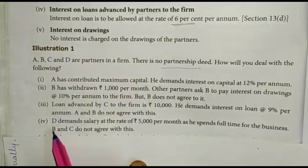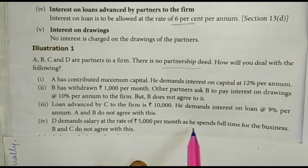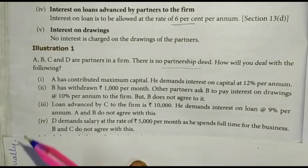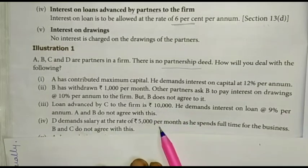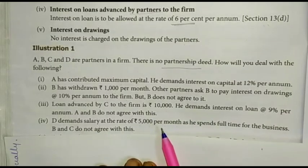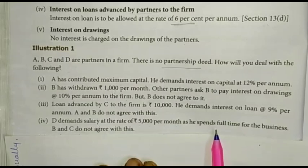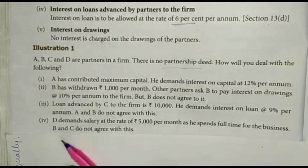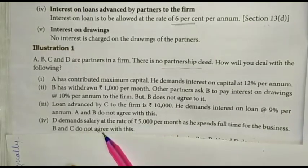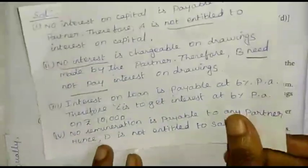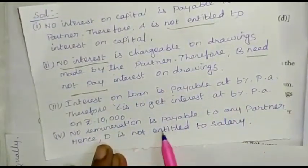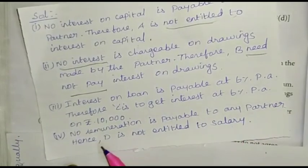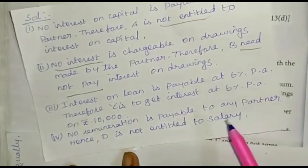Fourth one: D demands salary at the rate of Rs. 5,000 per annum as he spends full time for the business. B and C do not agree with this. So D is not entitled to salary or remuneration.